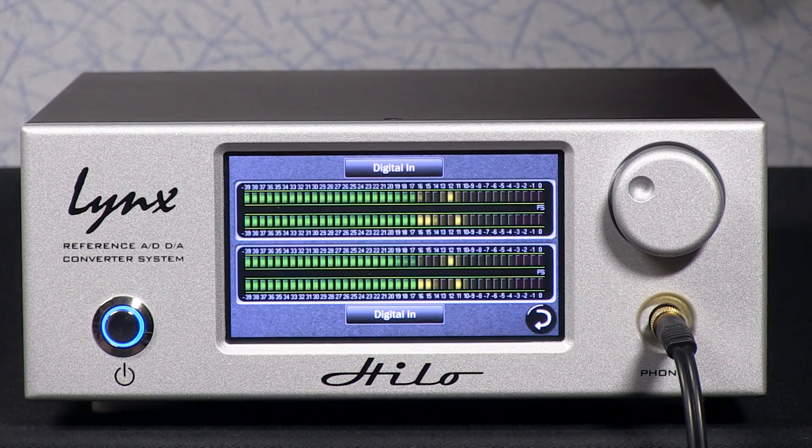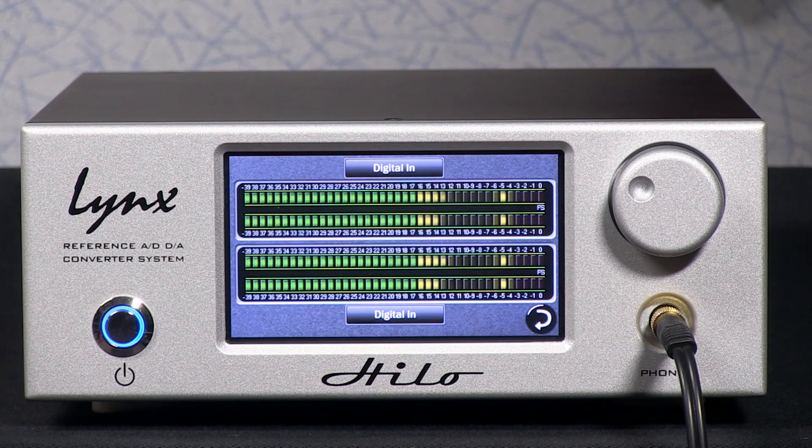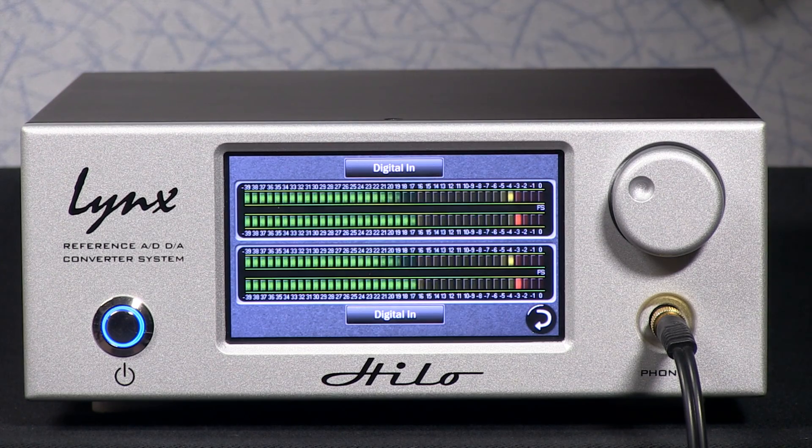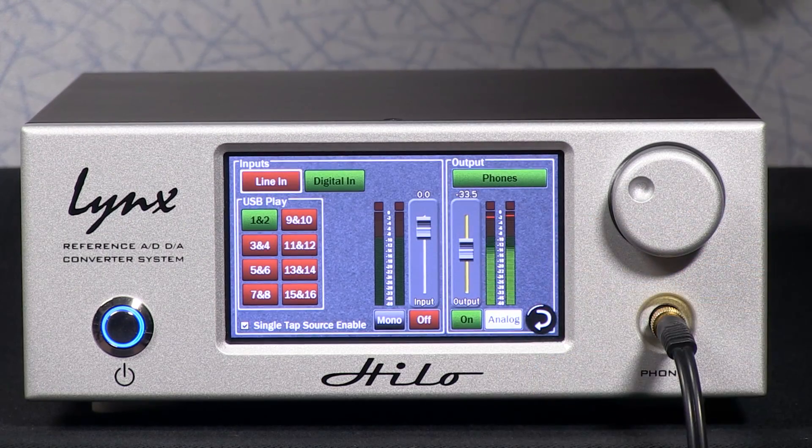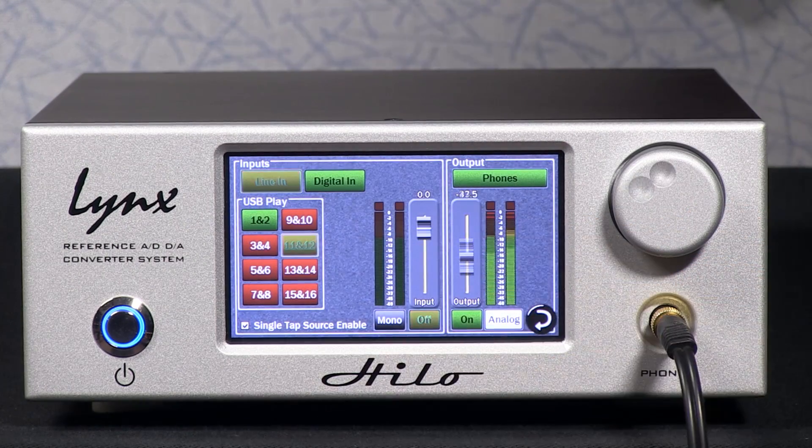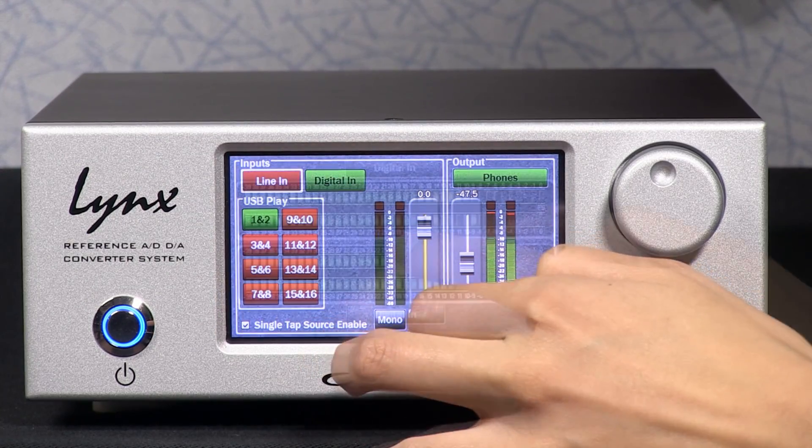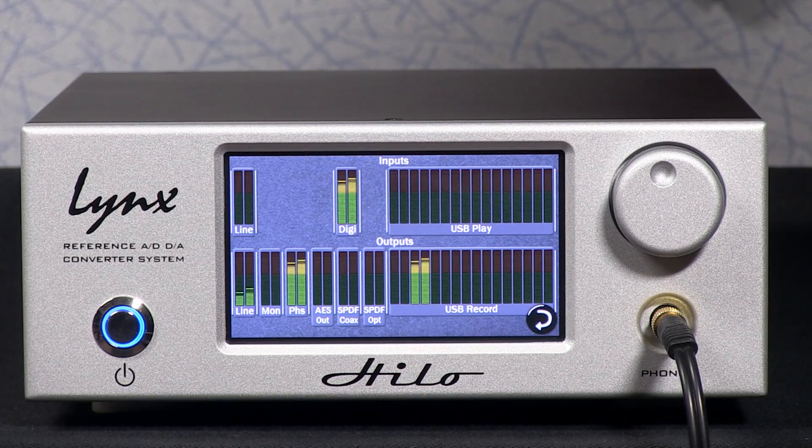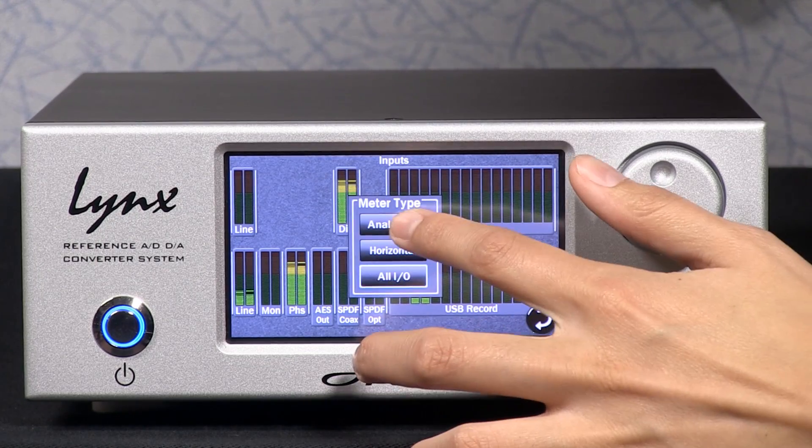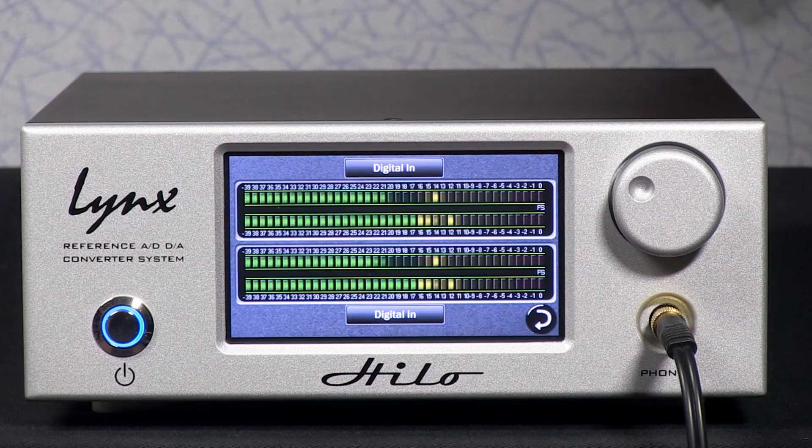The front panel of this unit has a 480 by 272 pixel high-res LCD touchscreen. From here you are able to control the 32-channel internal mixer, route any input to any output, and meter any input or output with either traditional VU style meters or more modern horizontal meters.